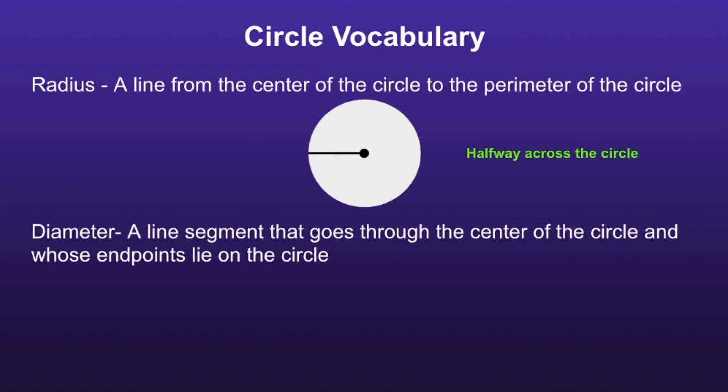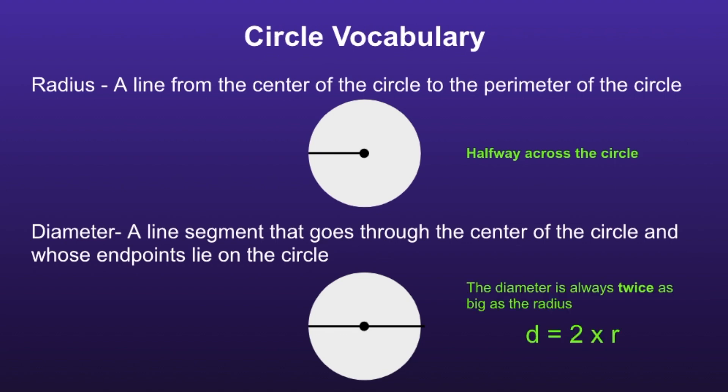Diameter. A diameter is a line segment that goes through the center of the circle and whose endpoints lie on the circle. So the diameter goes all the way across the circle, and it is twice as big as the radius.